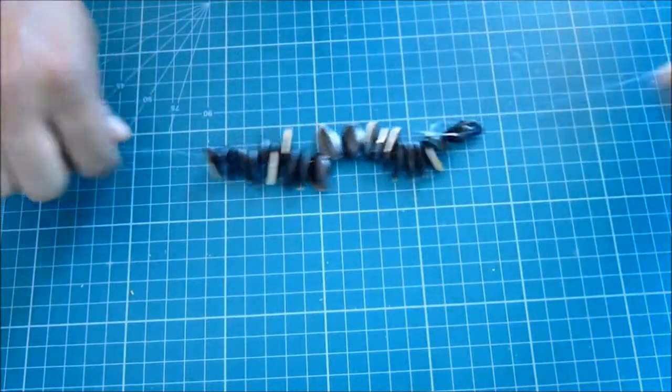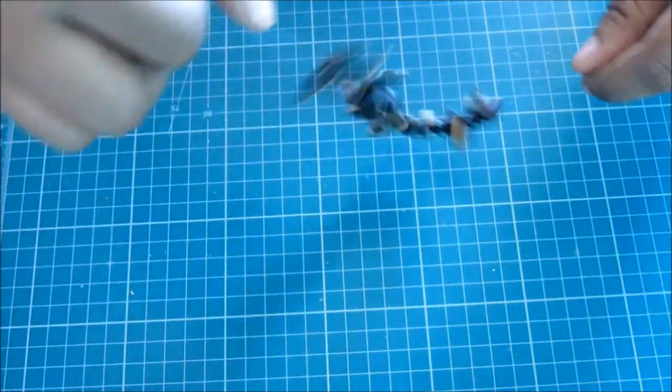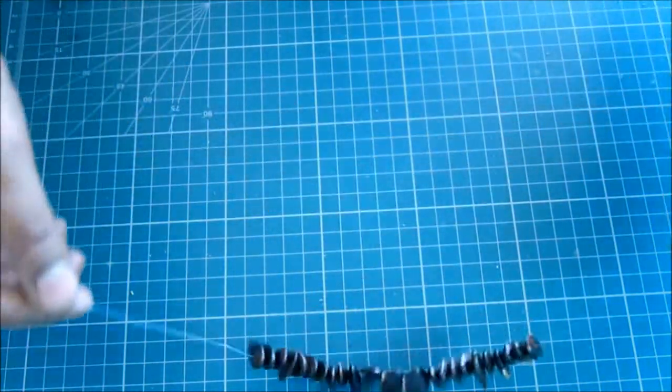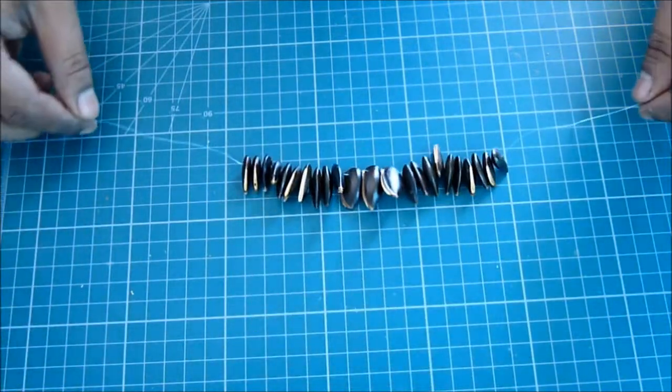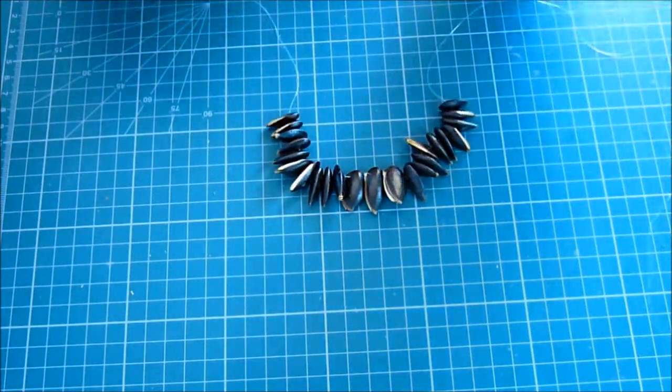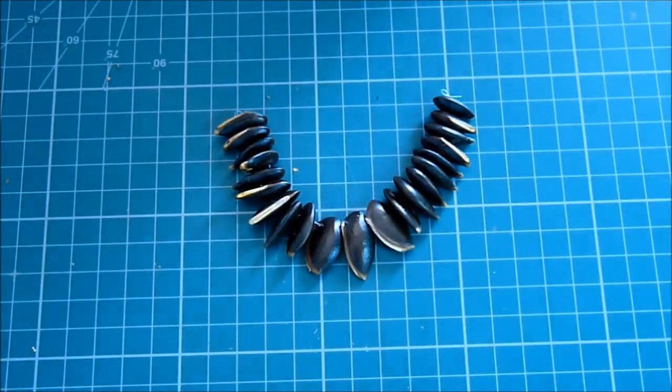Once finished, just tie knots on both ends so that the seeds cannot come out. Then make a loop like this and cut the extra string.